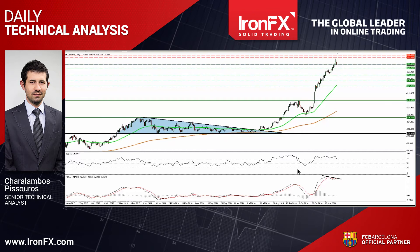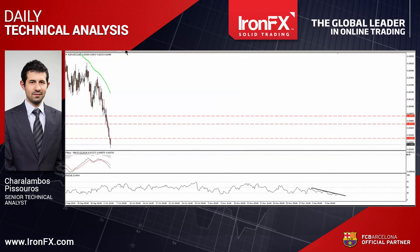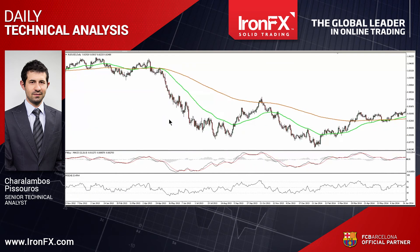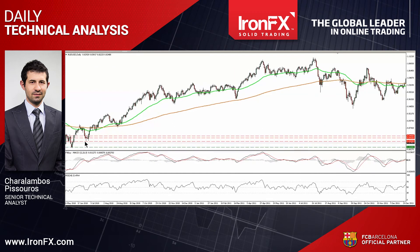Let's continue our assessment with AUDUSD. This pair continues its tumble, falling below the support turned into resistance of 0.83 — a support zone defined by the lows of July 2010. I would now expect sellers to drive the battle lower and aim for the next support obstacle of 0.81, marked by the lows of the 7th and 8th of June 2010.